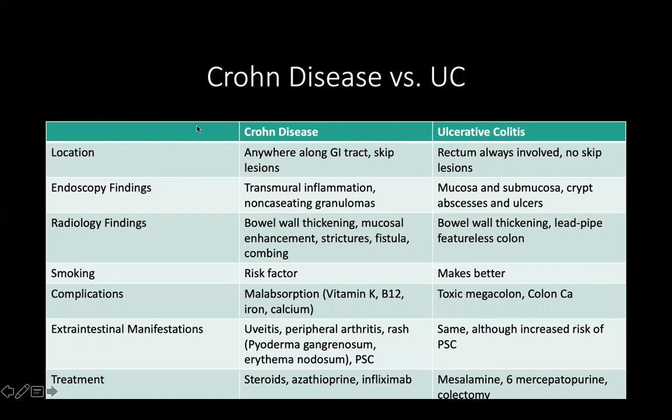On endoscopy, Crohn's disease typically shows transmural inflammation of the bowel — the entire bowel wall, including mucosa, submucosa, muscularis propria, and serosa, is involved. On pathology, you get non-caseating granulomas. In ulcerative colitis, only the mucosa and sometimes the submucosa are involved. You often get crypt abscesses and ulcers, but certainly not granulomas.